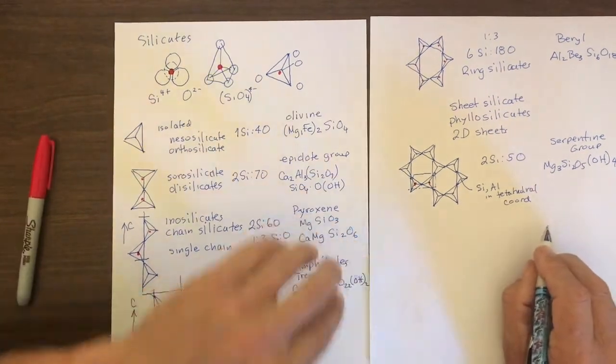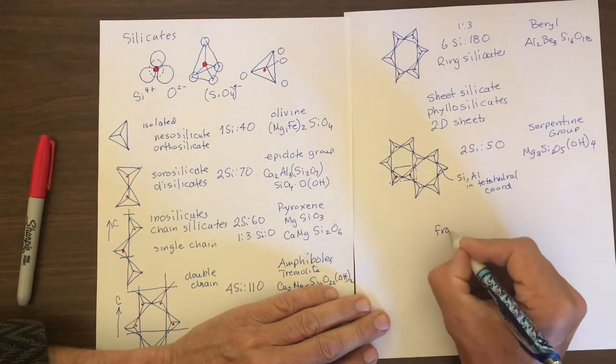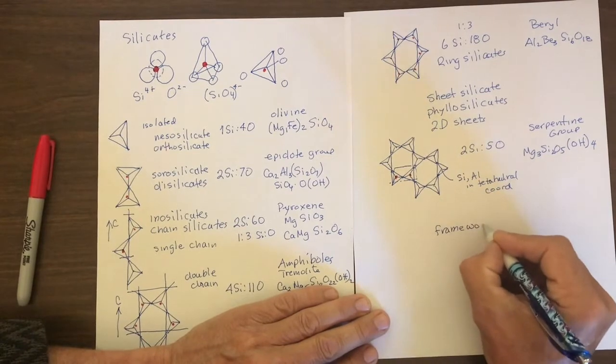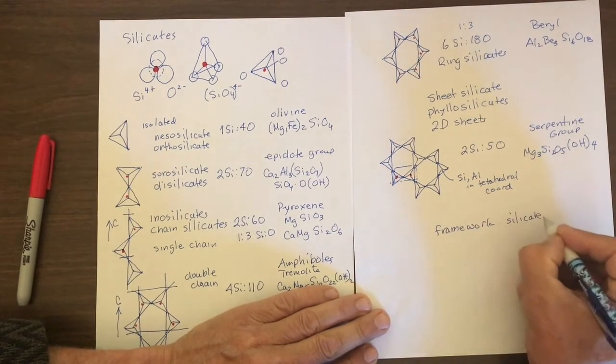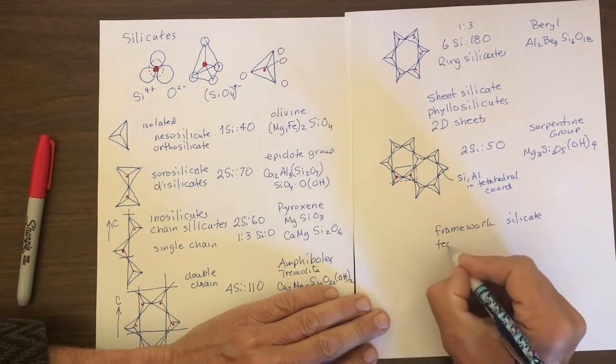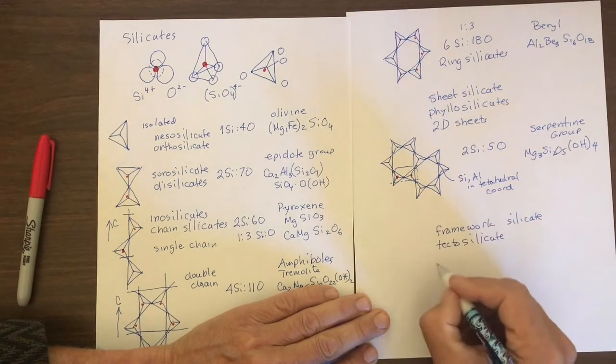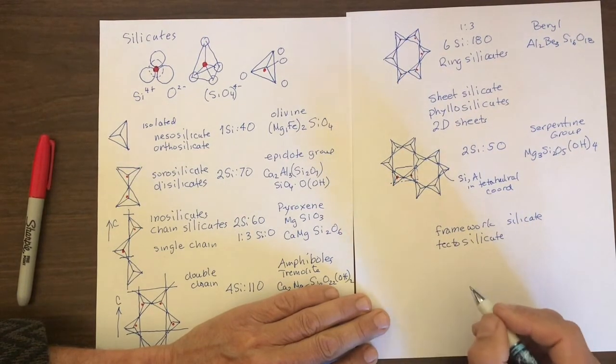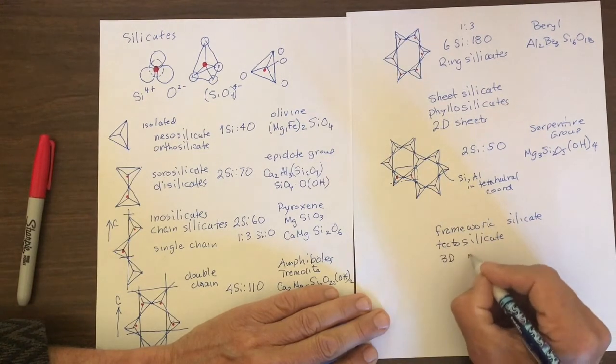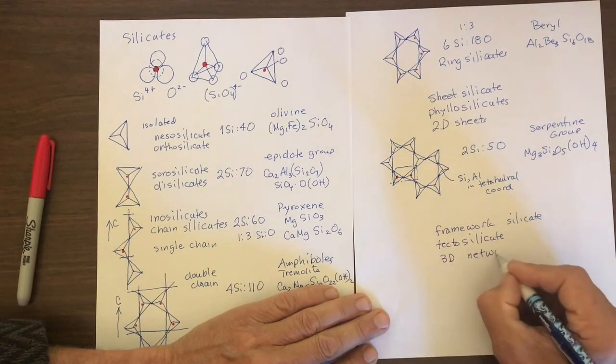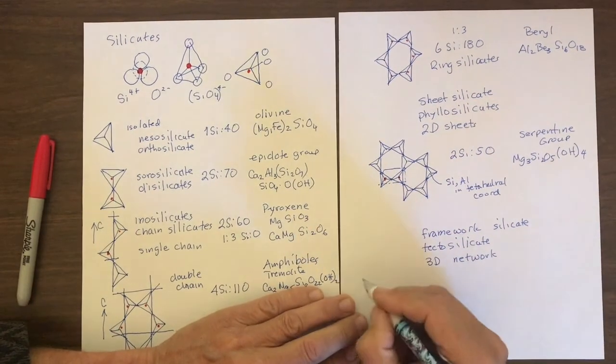Okay. The last type of silicates we're going to look at are called framework silicates. Those are also called tectosilicates. And in this case, the silica tetrahedra are linked together in a 3D network, which is difficult to illustrate on this 2D sheet of paper. But we'll give it a try.